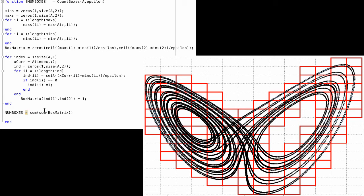If we then just sum up all the entries of the matrix, that's this line here, we'll get the number of boxes needed of that size epsilon to cover the trajectory. This is precisely the function you needed for part 1 of the homework.